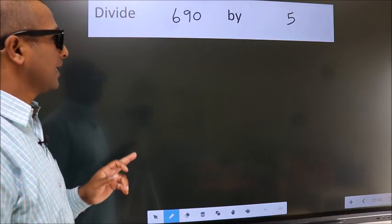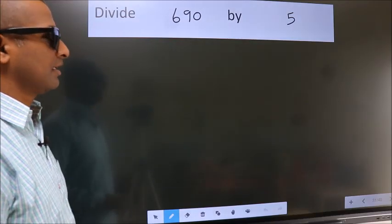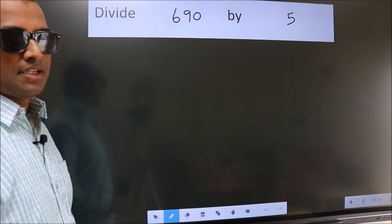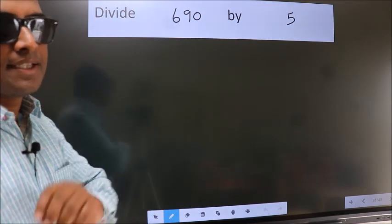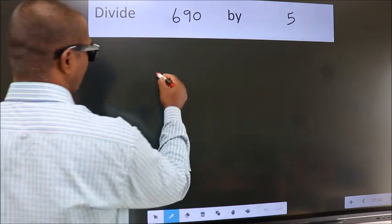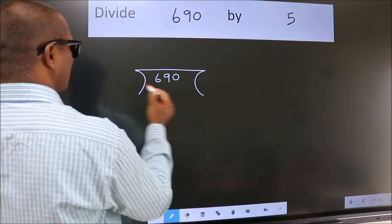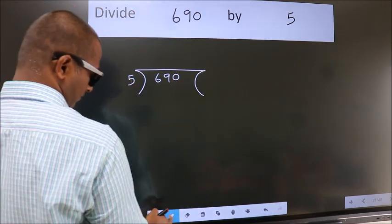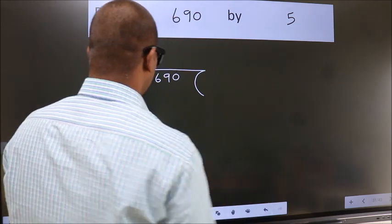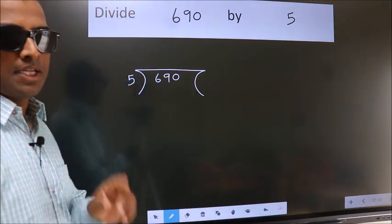Divide 690 by 5. To do this division, we should frame it in this way. 690 here, 5 here. This is your step 1.